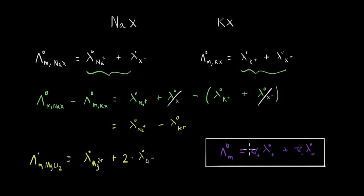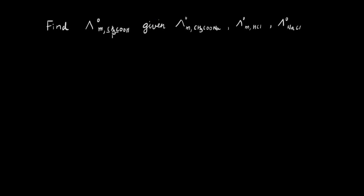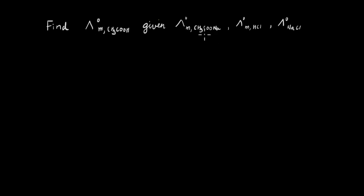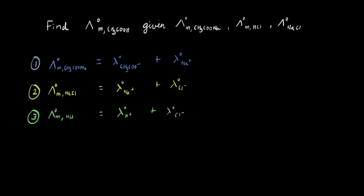Now let's see how we can use this expression to find the limiting molar conductivity of a weak electrolyte. We want to find Λ° for CH₃COOH, and we are given the limiting molar conductivity values of CH₃COONa, HCl, and NaCl — which are all relatively strong electrolytes. You can pause the video and give it a try. Let's apply Kohlrausch's law to each of these three electrolytes.